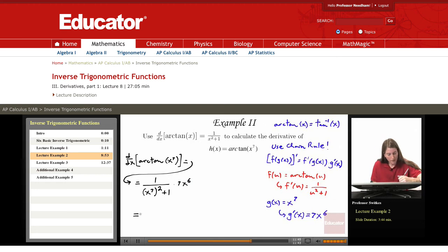So we have 7x to the 6th divided by... now (x⁷)² has the exponents multiply, and we get x to the 14th, plus 1.